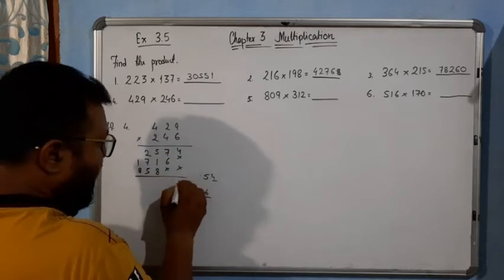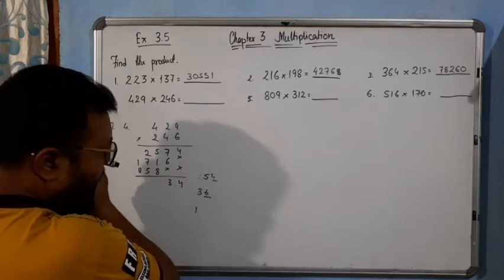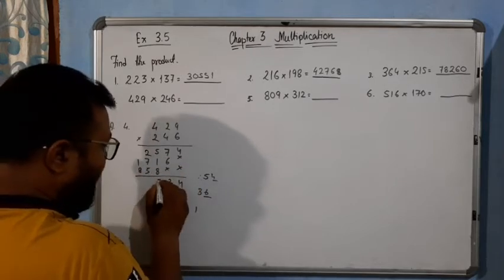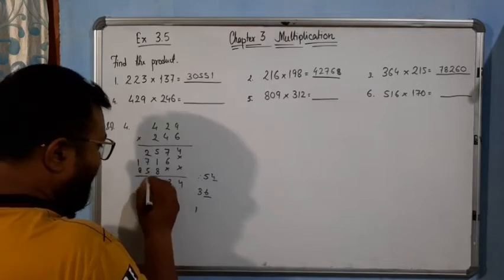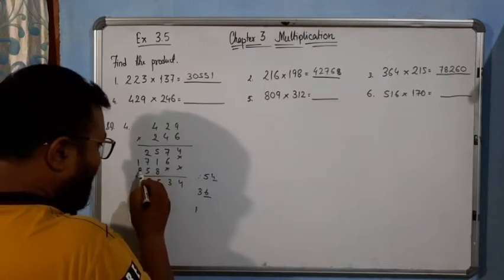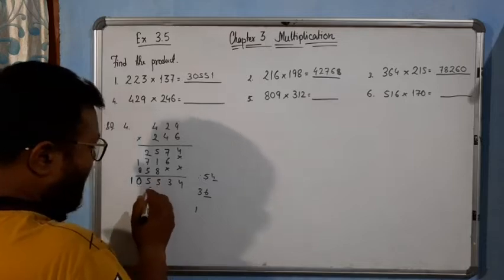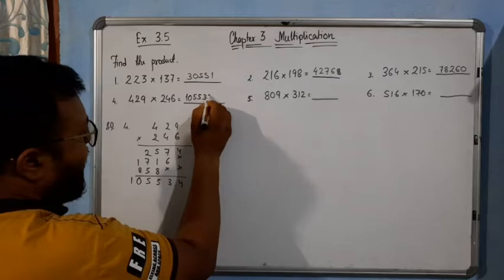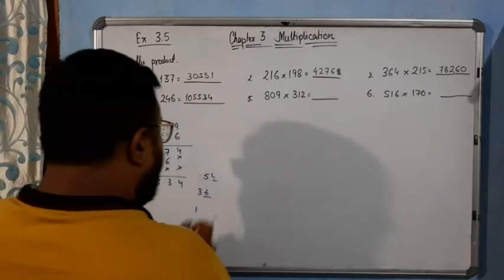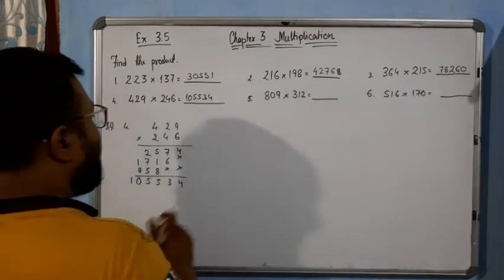Double cross. 2 times 9 is 18, write 8 carry 1. 2 times 2 is 4, 5. Write 5, carry 0. 2 times 4 is 8. Now adding: 4, 3, 5, 5, 0, 1. So the answer is 105534.